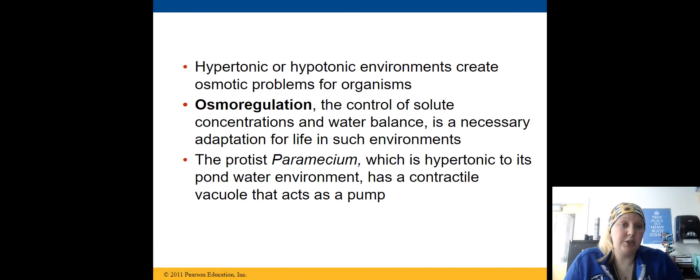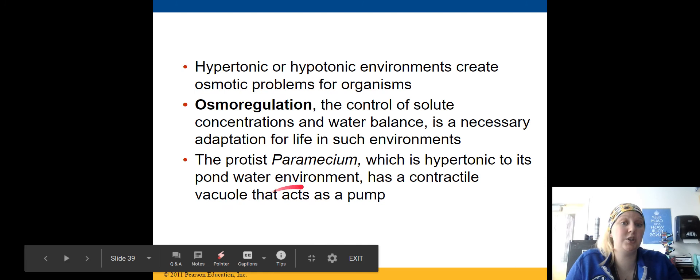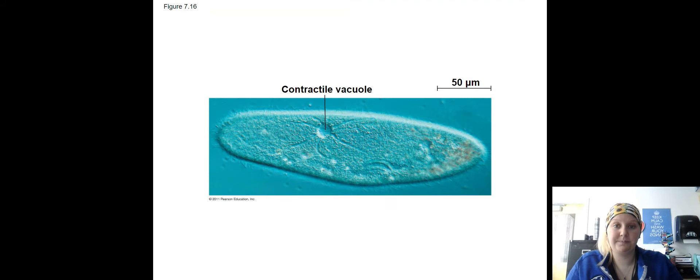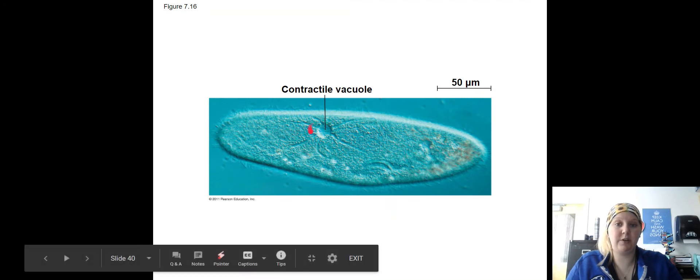Hyper or hypotonic solutions create osmosis problems for organisms. This leads to an adaptation called osmoregulation, which is the control of solute concentration and water balance, and is necessary for the adaptation of life in such environments. Parameciums have a hard time surviving in the pond in which they live because they would suck in too much water. So they have created some type of a vacuole that acts as a pump to rid the cell of excess water. So that would be that vacuole right there.